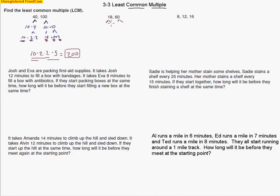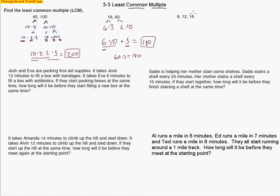I see that 6 goes into 18 and 60: 6 times 3 makes 18, 6 times 10 makes 60. So 6 is a common factor. 3 is prime and 10 is not, but 10 doesn't share a factor with 3. So I'll take the bigger number: 6 times 10 makes 60. To make 18 I already have the 6, so I just multiply by 3. Now multiplying: 6 times 10 is 60, times 3 makes 180. So 180 is the least common multiple.